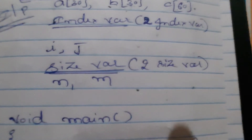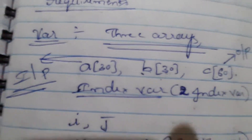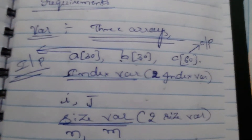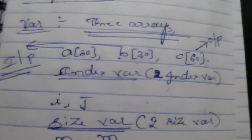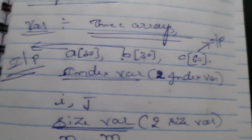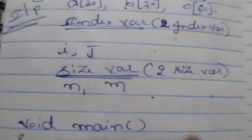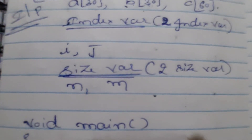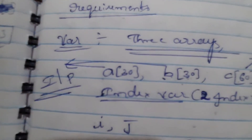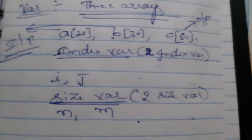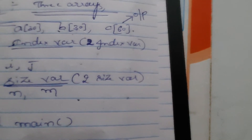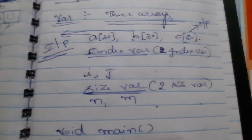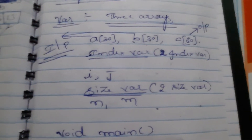How many size variables are required? Two size variables — one size for A and one size for B. The size of C is automatically decided based on array A and array B, because C is an output array formed by combining A and B. The size of C will be N plus M, because N elements of A are copied into C and M elements of B are copied into C. So we do not need a separate size variable for C. The requirement is: three array variables, two index variables, and two size variables.